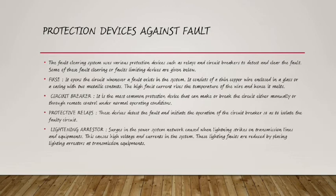Protection devices against electrical fault: The first is a fuse — a device that opens or cuts the circuit when there is excess flow of current. It opens the circuit whenever a fault exists in the system. A fuse is made of a tiny wire; when there is excess current flowing through it, the wire cuts. The second is the circuit breaker — the most common protection device that can make or break the circuits either manually or through remote control under normal operating conditions.